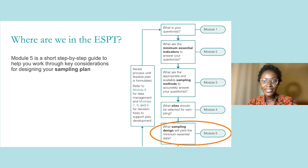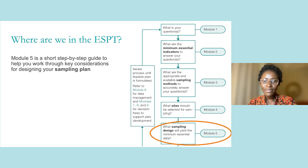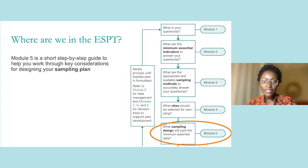At this point in the ESPT training course, you should have defined your priority program question in Module 1, selected the appropriate indicators to address your question in Module 2, determined which sampling methods are most appropriate to collect the data you need in Module 3, and selected the right site type and corresponding survey type to address your priority program question in Module 4. If this is your first time working through the ESPT, I strongly encourage you to work through Module 5 only after you've worked through and understood Modules 1, 2, 3, and 4.